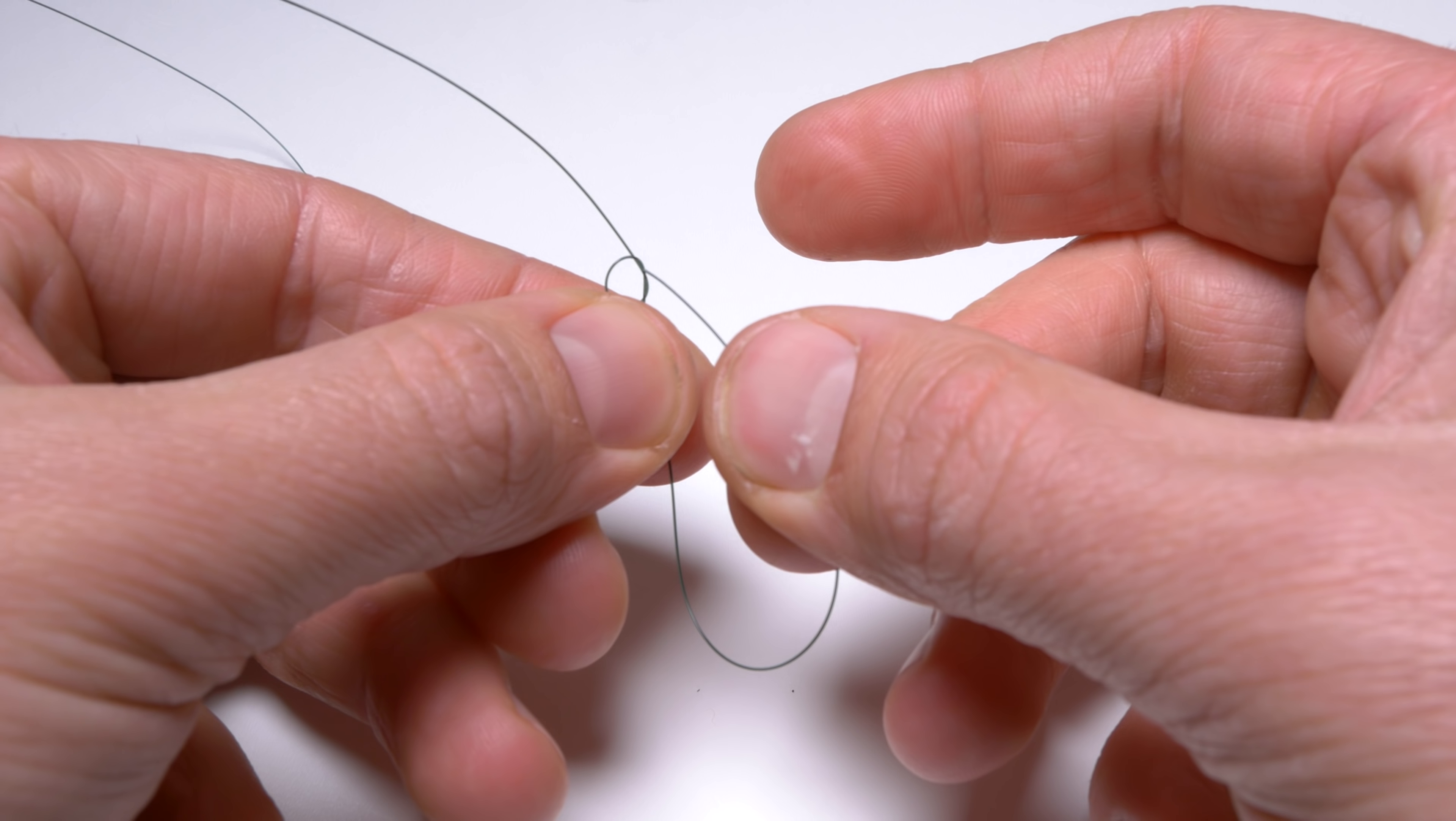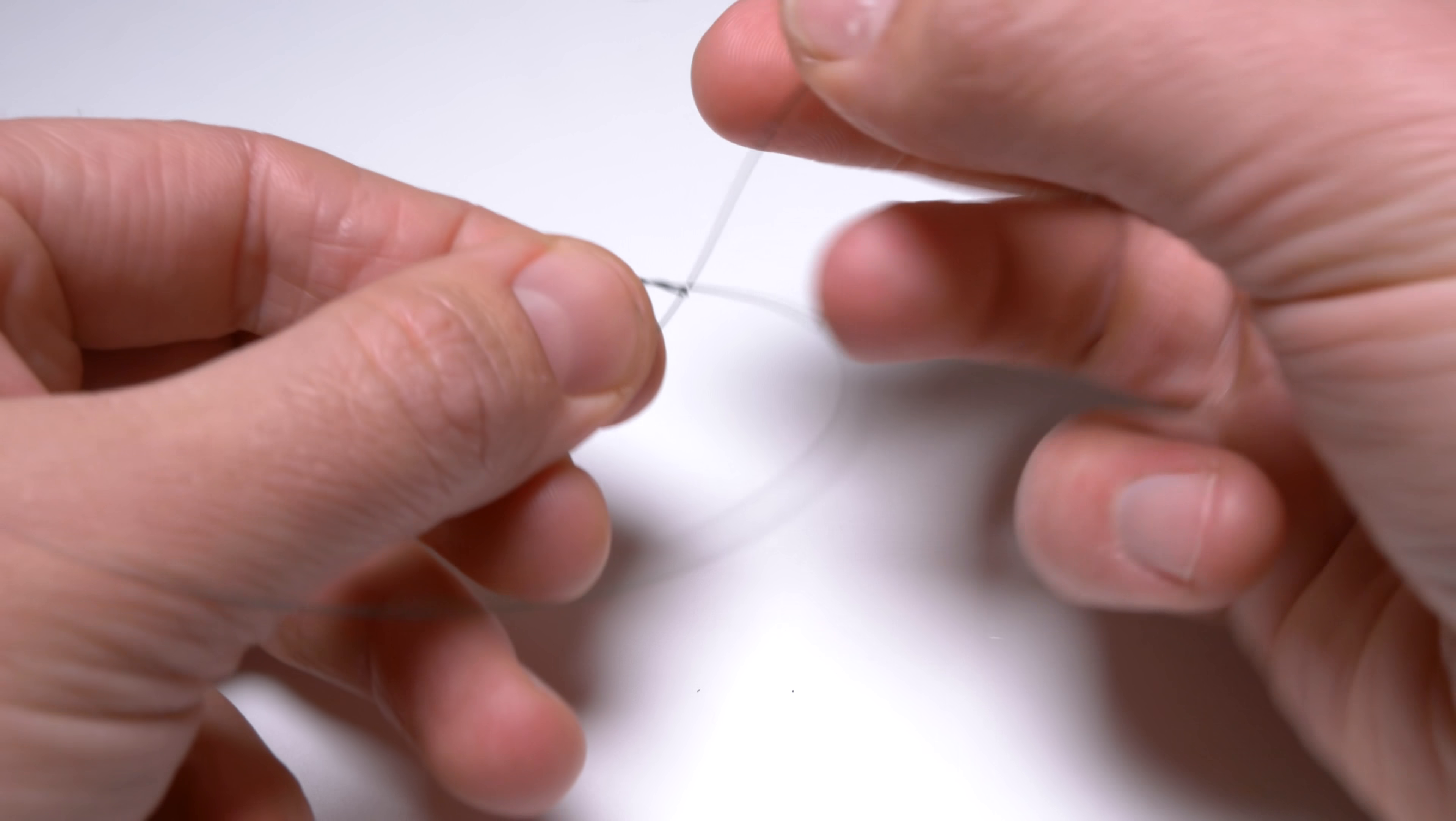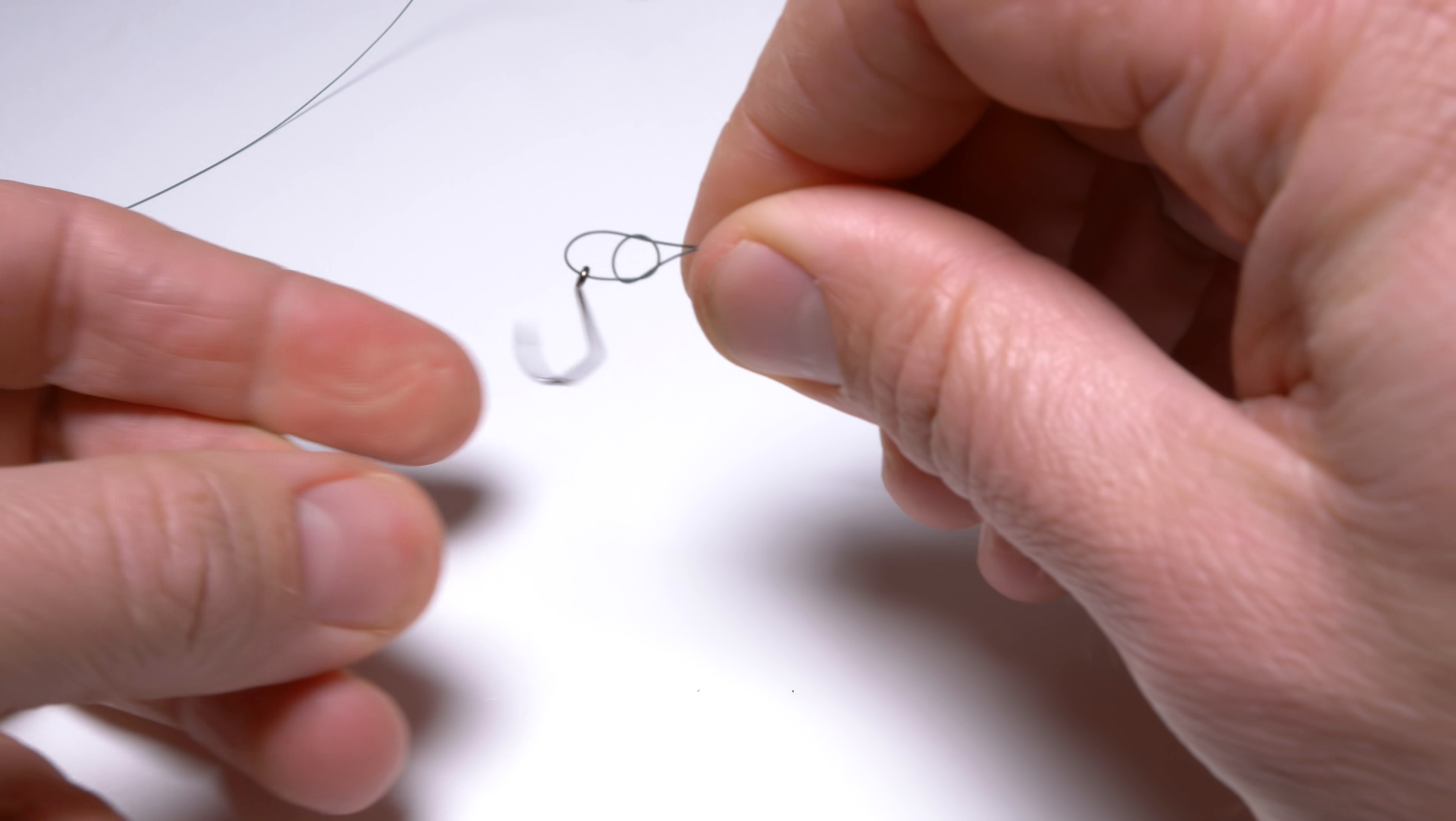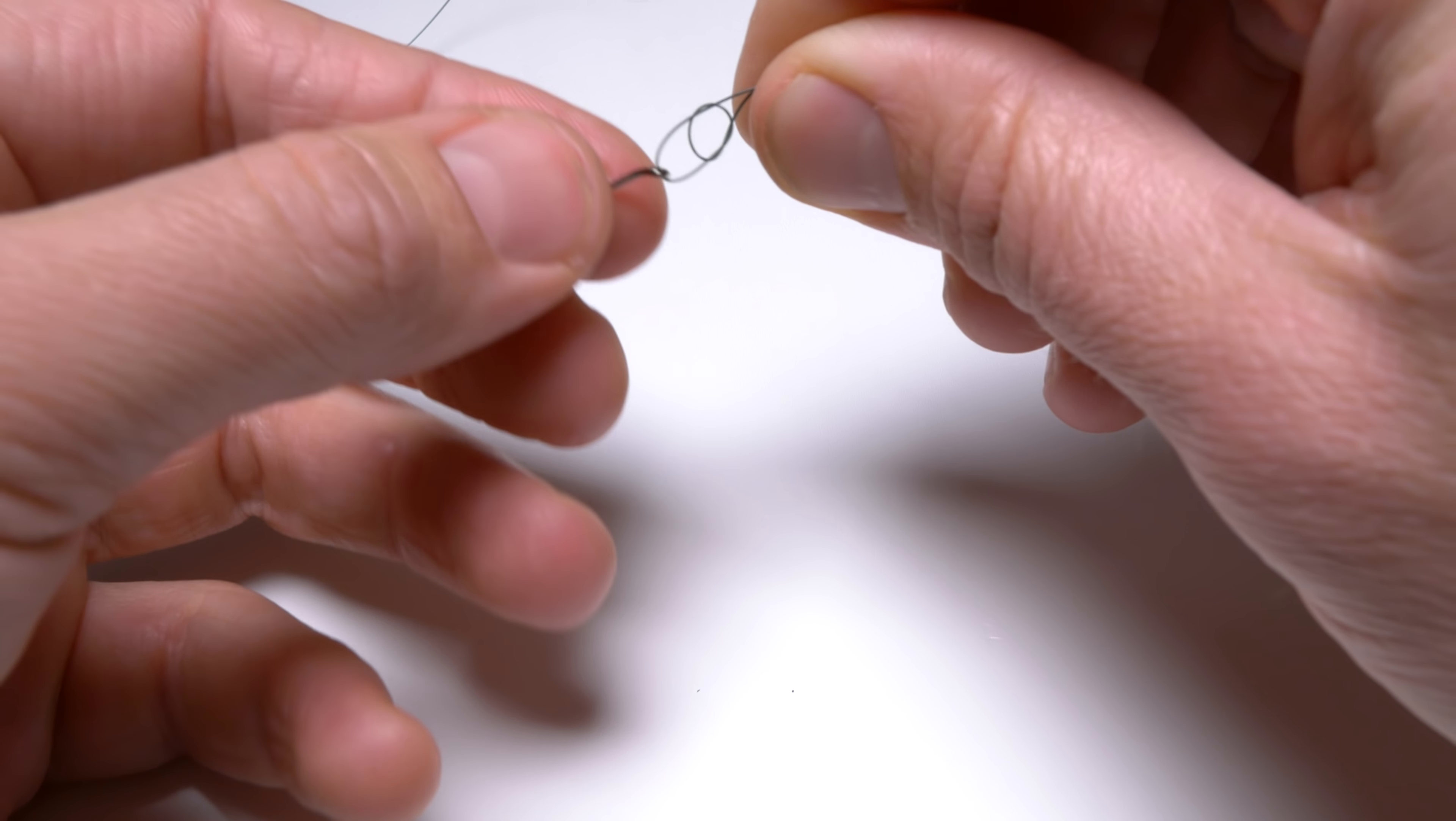Then we want to thread the tag end to the middle of that sergeant's knot. Just like that. We are aiming to have a hook in very small loop.